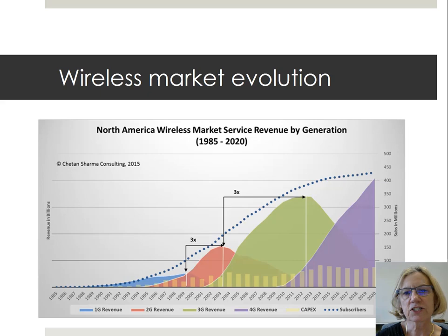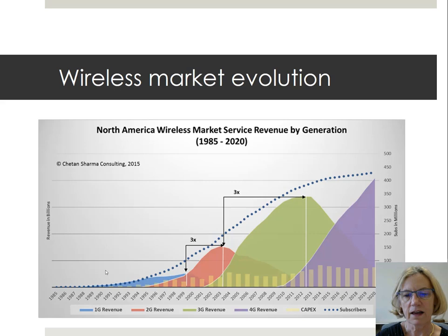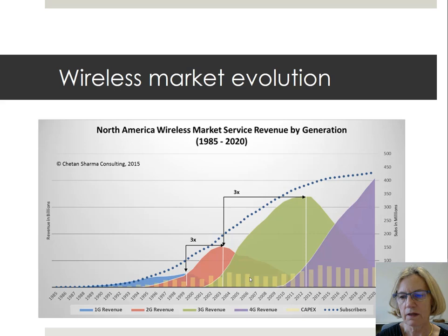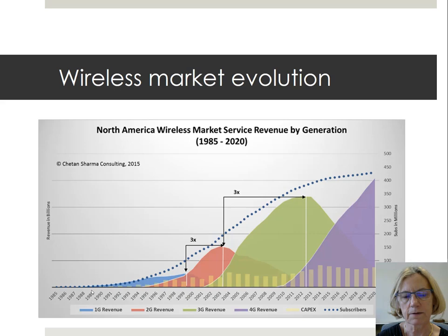Here's a graph showing the economics impacting wireless services. Three quantities are shown: the number of subscribers over the years as a dotted line showing exponential growth that is now tapering off and saturating; the capital expenditure shown as yellow histograms going up over time; and revenue in billions of dollars shown in different colors corresponding to the different generations being adopted.